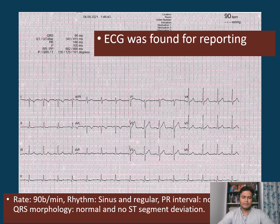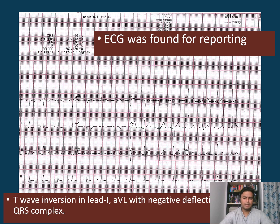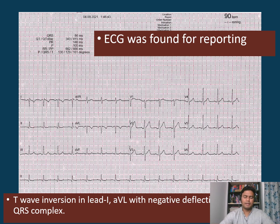The rate is around 90 beats per minute, the rhythm is sinus and regular, the PR interval is normal, and the QRS morphology also seems to be normal. There is no ST segment deviation, but there are T wave inversions in lead I and lead AVL, with negative deflection of the QRS complex.